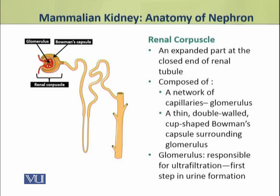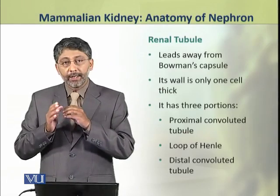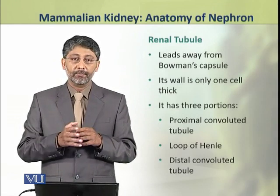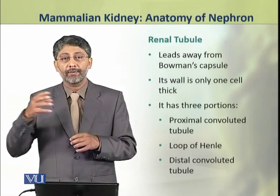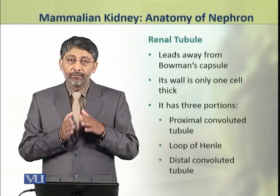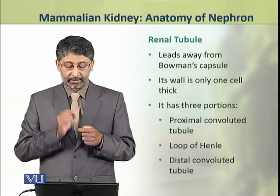The glomerulus is responsible for ultrafiltration, which is the first step in urine formation. The renal tubule leads away from Bowman's capsule, and its wall is only one cell thick.